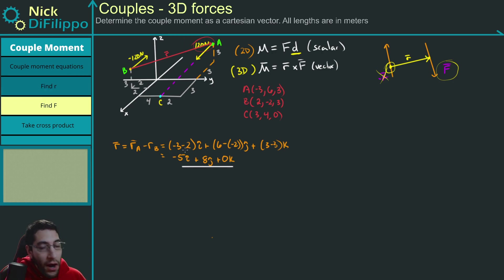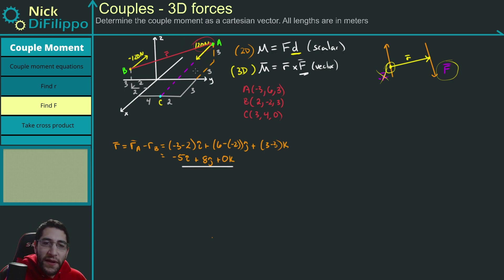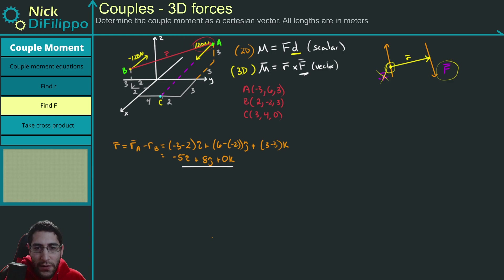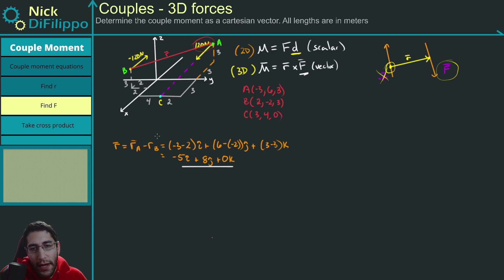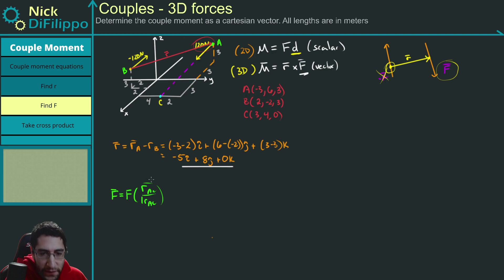Now that I have my R vector, I want to find my F vector. I said I want to use this 120 Newton force, and I can figure out its direction because it intercepts point C. The force along a line is given by F equals the magnitude times the unit vector R_AC over the magnitude of R_AC. So let's figure out R_AC and its magnitude.